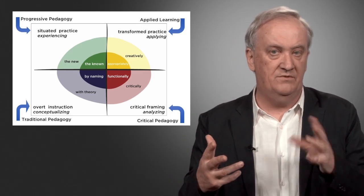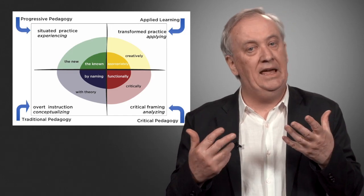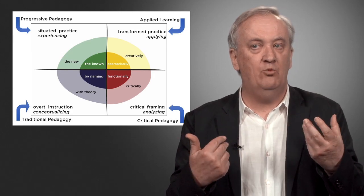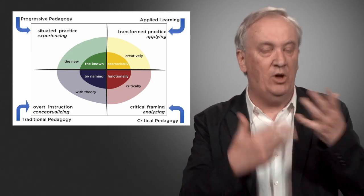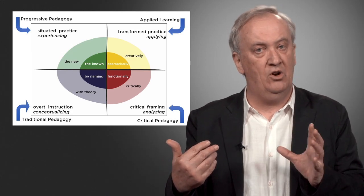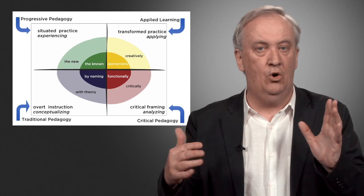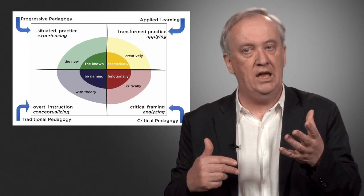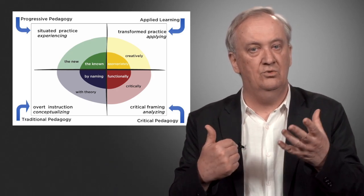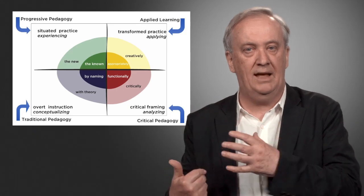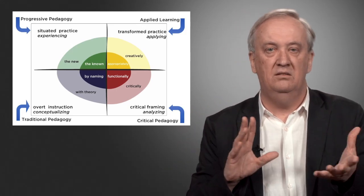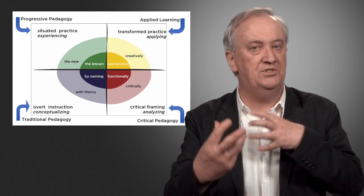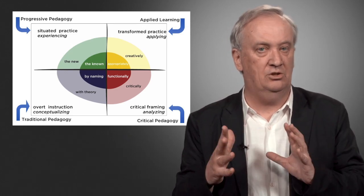Now what Mary and I have since done with this learning by design framework is we have given these sort of slightly less technical words, but also words which can be used as labels for things that we call knowledge processes. So what we've got here with these different, these four segments is we've changed situated practice to experiencing, we changed overt instruction to conceptualizing, we changed critical framing to analyzing, we changed transformed practice to applying. These mean the same kind of thing. They're not quite the same, but they're close enough. We wanted to have these labels to describe these different pedagogical orientations.